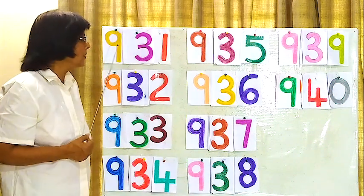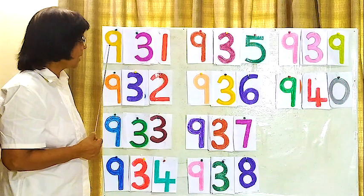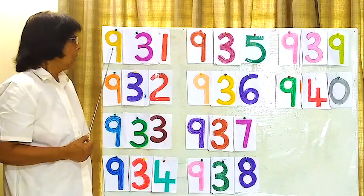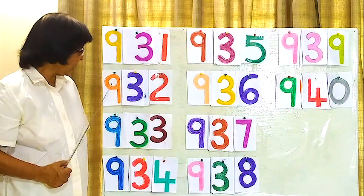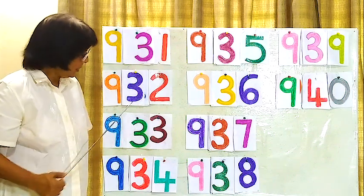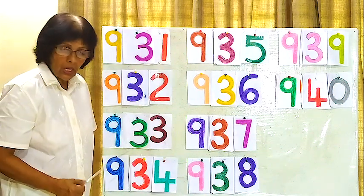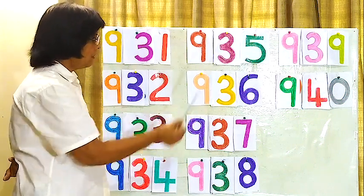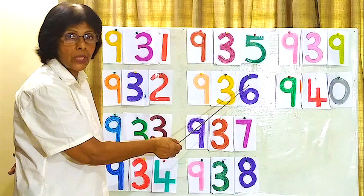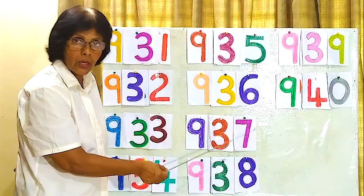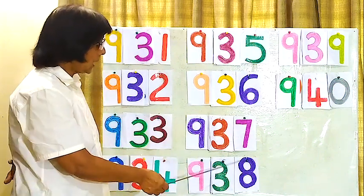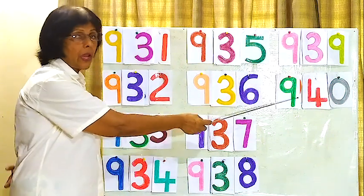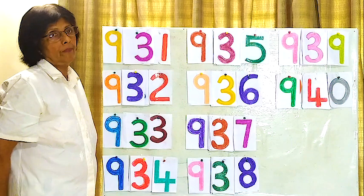Now once again we will read the first number. We will start from here. We will read all the numbers at once. 931, 932, 933, 934, 935, 936, 937, 938, 939, 940. Okay.